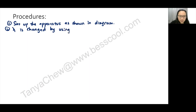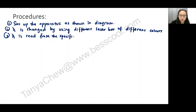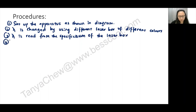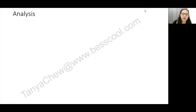Step three: λ is read from the specification of the laser box, as each laser box has its own specification listing the wavelength. Step four: h is measured using a meter rule.